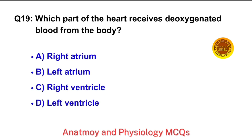Question No. 19. Which part of the heart receives deoxygenated blood from the body? The right answer is option B: Left atrium.